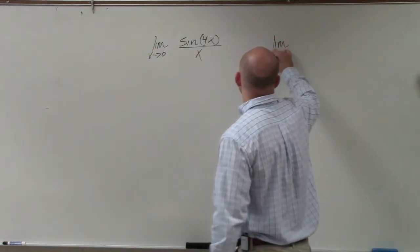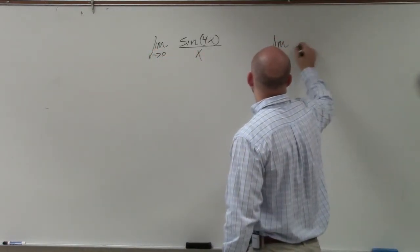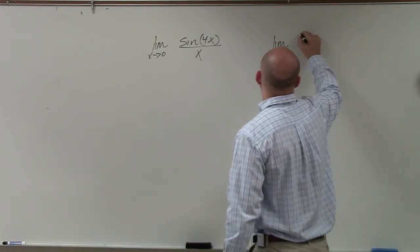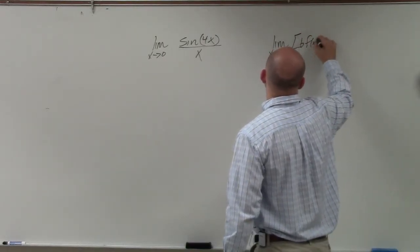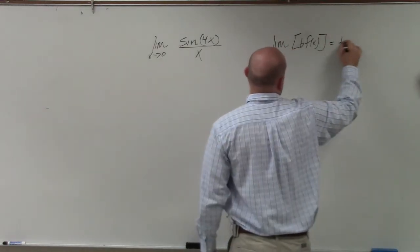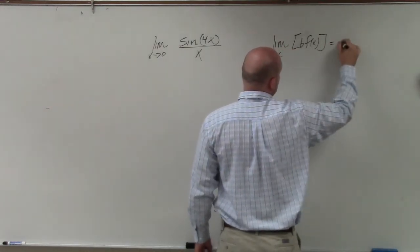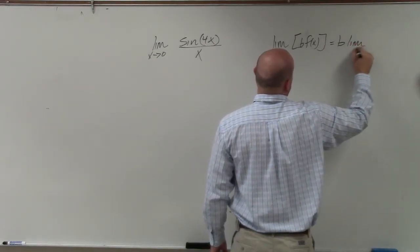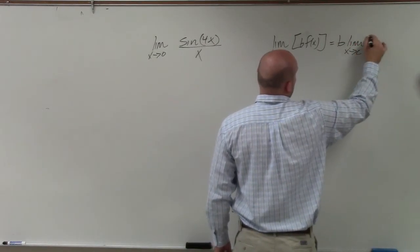Remember, our properties of limits say if I have limit as x approaches c of b times f of x, that's the same thing as b times the limit as x approaches c of f of x.